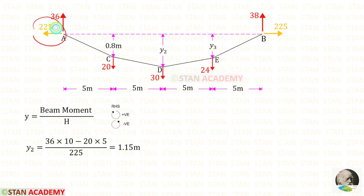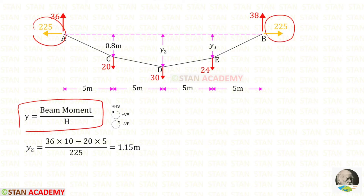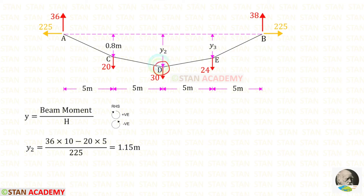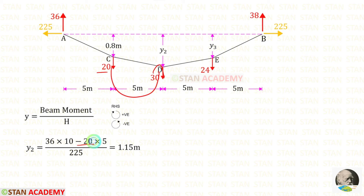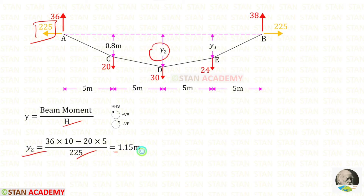We have calculated the horizontal thrust H. Now, using the same formula, we can find Y2. Up to point D, we have the vertical reaction and the load of 20 kN. The vertical reaction acts in the clockwise direction — positive — with a distance of 10. This load acts in the anticlockwise direction — negative — with a distance of 5. We know the value of H is 225. Applying that, finally for Y2 we will get 1.15 meters.